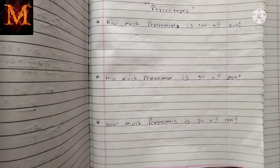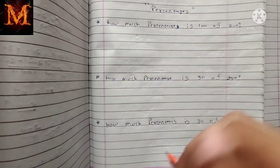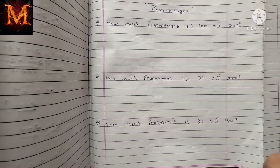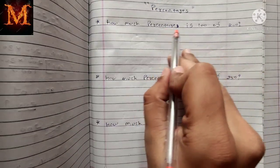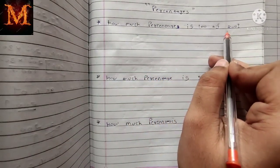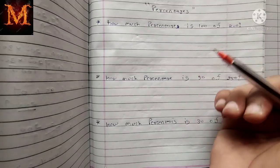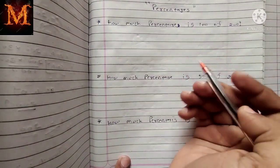Now in this type of question we have to find the percentage. In the previous questions we found how to find the number from a given percentage — for example, 40% of 200. Now we have to find the percentage itself, not the number. So how can we solve this kind of question? The method is the same.